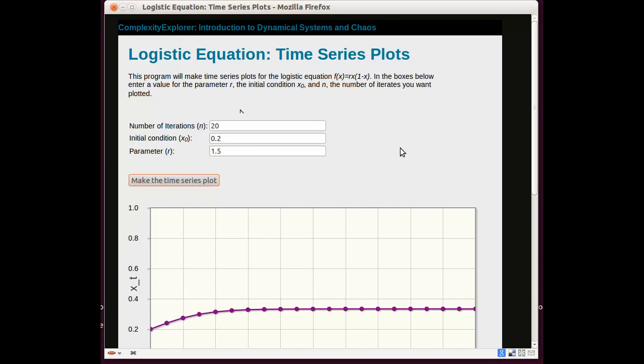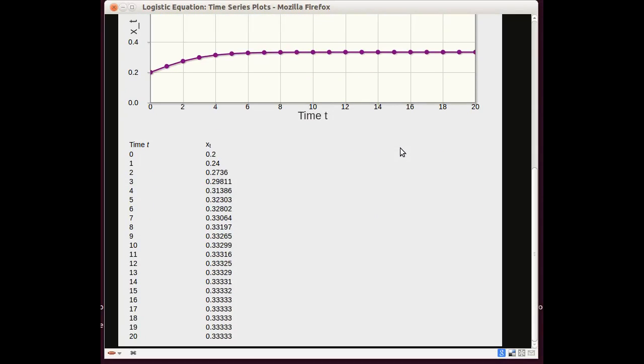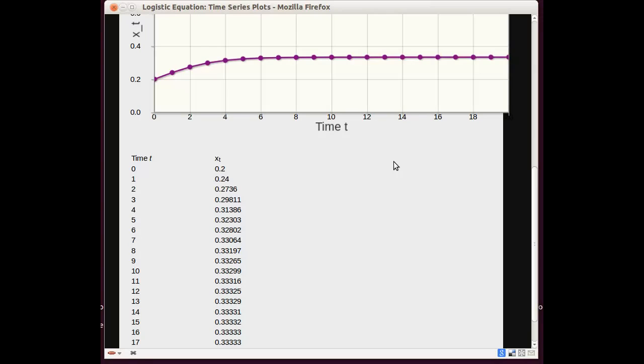So I'm going to scroll down. Beneath the plot is the orbits listed. Make that a little bit bigger. It may be a little easier to read. And we see it starts at 0.2, 0.24, 0.2736, just like we calculated with a calculator previously.